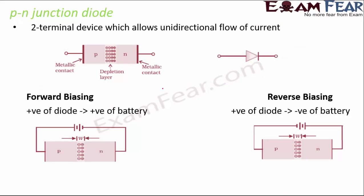The P-N junction diode is a two-terminal device which allows unidirectional flow of current — it allows current to flow only in one direction. The P-N junction has metallic contacts on both ends to allow current flow. In the diode symbol, one side is positive (P side) and the other is negative.